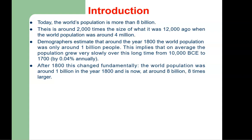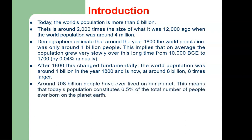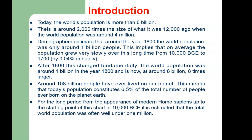After 1800 this changed fundamentally. The world population was around 1 billion in the year 1800 and is now at around 8 billion — 8 times larger than in 1800. Around 108 billion people have ever lived on earth, which means today's population constitutes only 6.5% of all people ever born. For the long period from the appearance of modern Homo sapiens up to 10,000 BCE, the total world population was often well under 1 million. The following figure shows how population has grown historically.